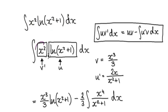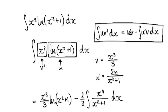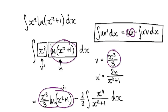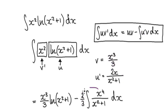Set one block to be v' and the other to be u. If this is u, then u' would be its derivative. If this is v', then integrate it and v would be the result. Now blindly apply the integration by parts formula: get u times v, and then subtract the integral of u prime times v, which gives us this expression with a constant of 2 over 3.